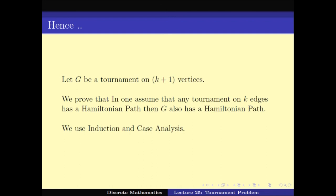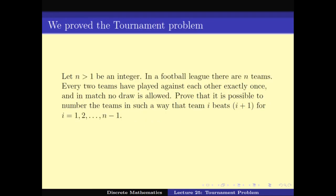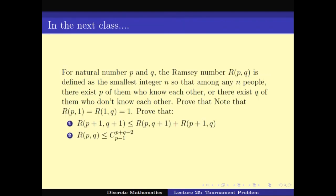The crucial part was understanding that there always exists an i such that the edge Vi to V and V to Vi+1 both exist. We have proved that in all three cases we can extend the Hamiltonian path on G minus V to a Hamiltonian path on G. Hence by induction, any tournament has a Hamiltonian path. In the next video lecture, we will look at the Ramsey number problem and new concepts in graph theory.